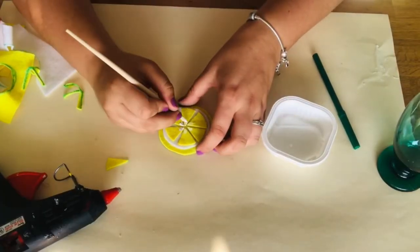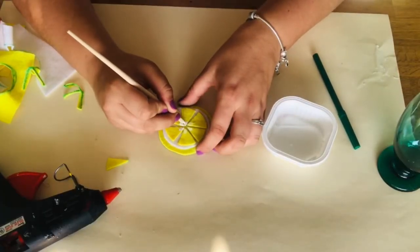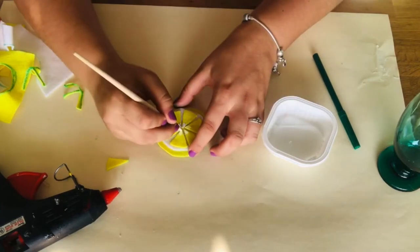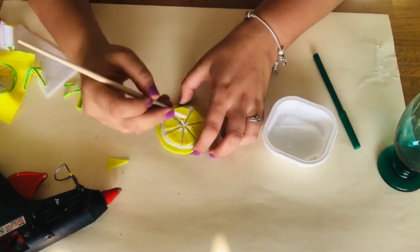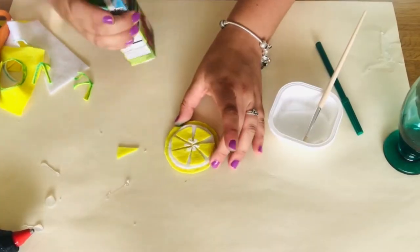Once you have everything glued on, take your white paint and draw on your seeds with your white paint on the tip of every yellow triangle. And then let your paint dry.